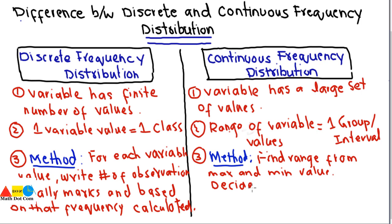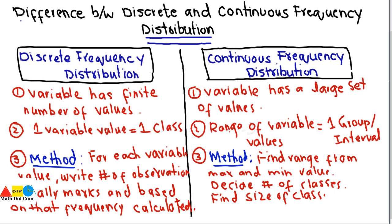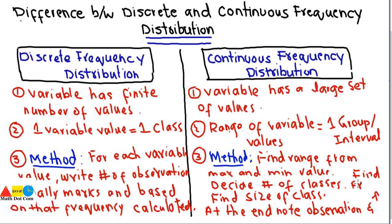After deciding the number of classes, find the size of each class based on the range and number of classes. Then note the observations and calculate the frequency, similar to discrete frequency distribution.